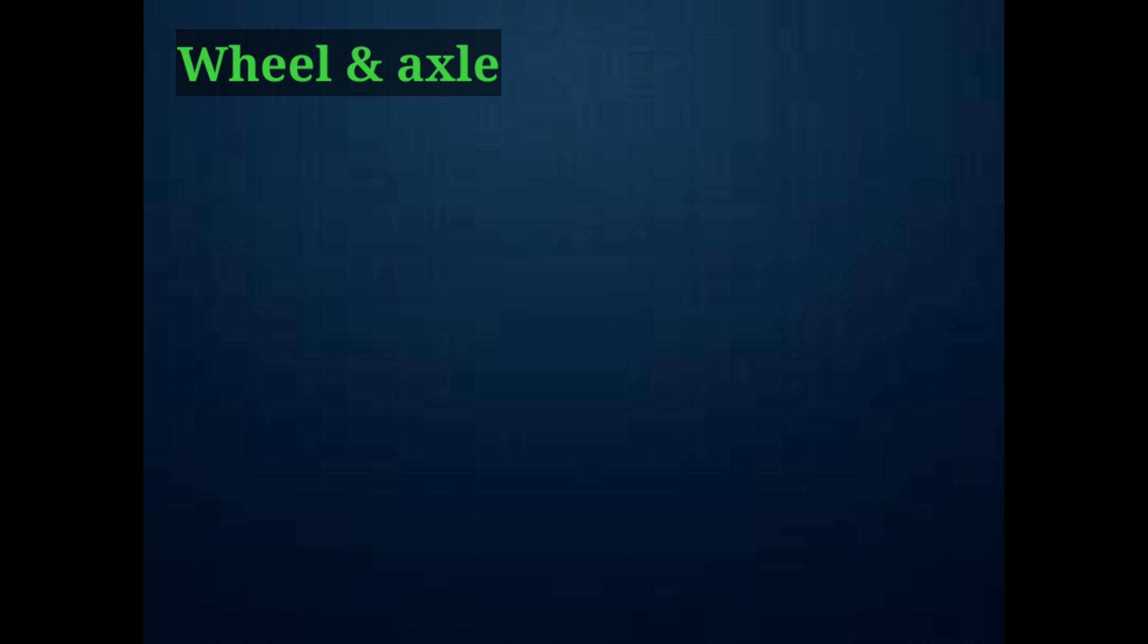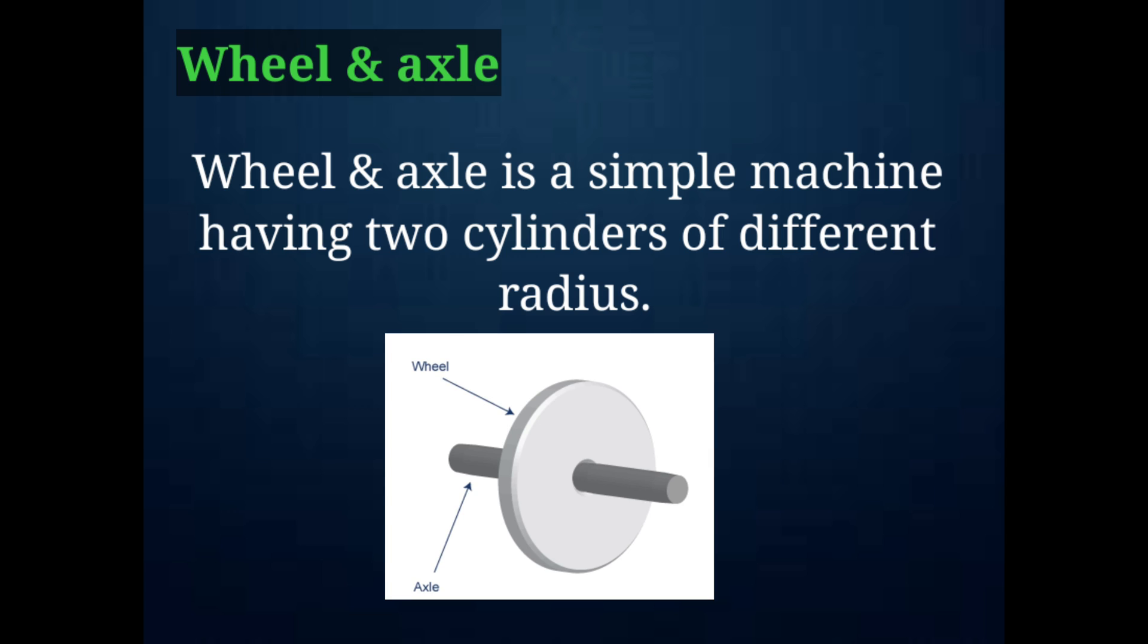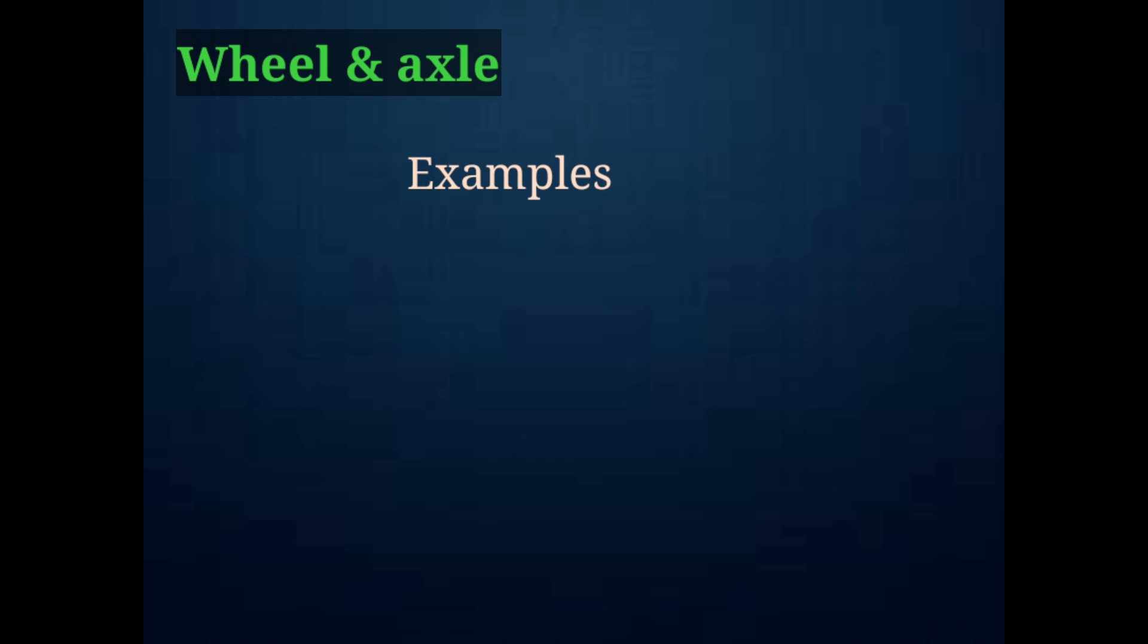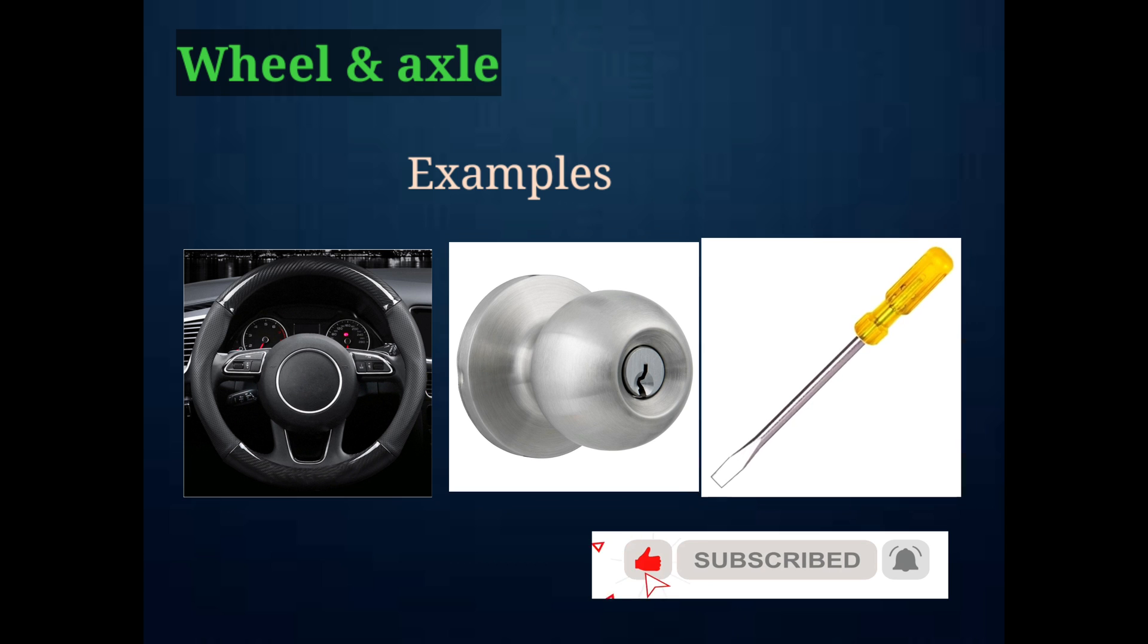Wheel and axle is a simple machine having two cylinders of different radius. The cylinder with large radius is called wheel, whereas the cylinder with small radius is called axle. These two cylinders are attached to each other and rotate together when effort is applied to the wheel. Some examples of wheel and axle are steering of a car, door knob, screwdriver, etc.